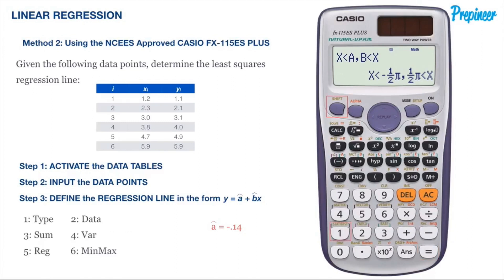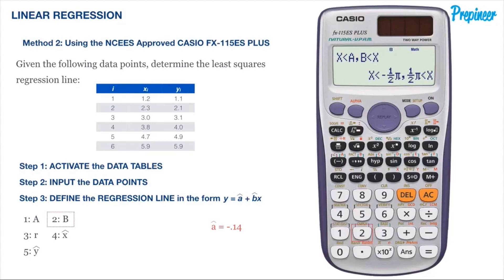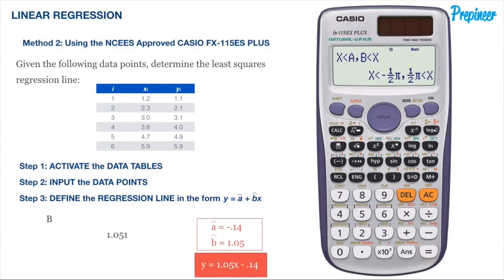We now need to determine the variable b. To do this, click the shift button and then the one button again to activate the stat distribution functionality. You'll be brought back to the same menu as before. Press 5 for option 5 regression. We will now see our regression menu. This time, press 2 to select option 2 for b. You will be brought back to the home screen with b displayed. Press the equals button to get our value, which is 1.051.